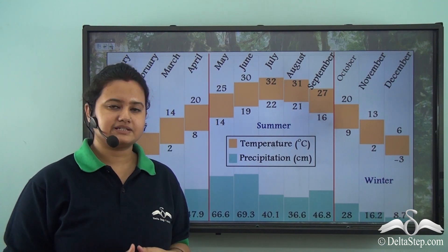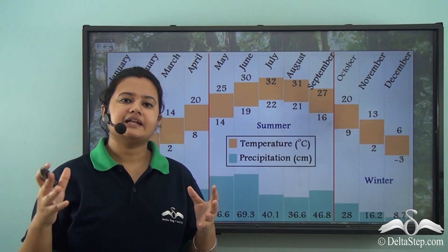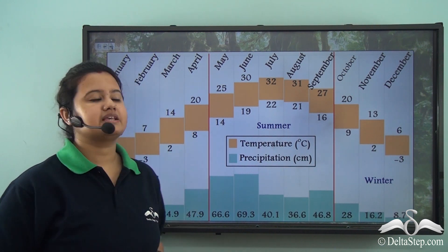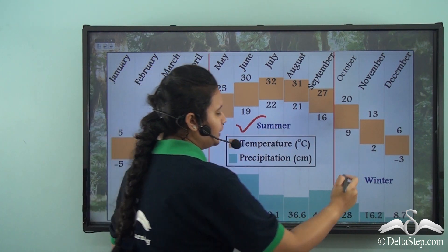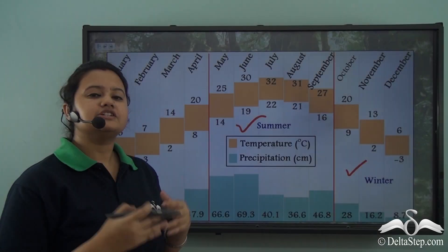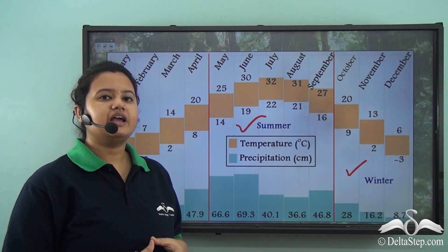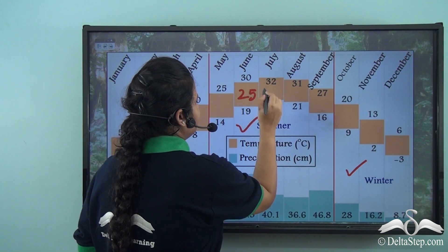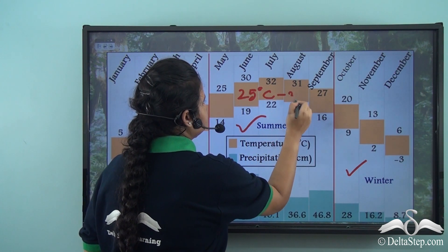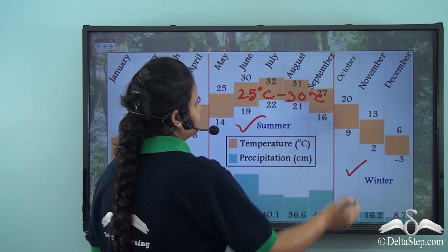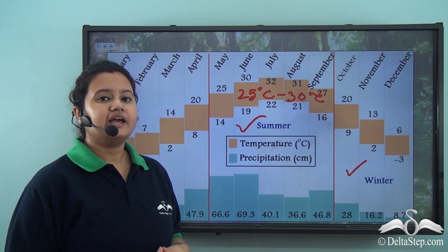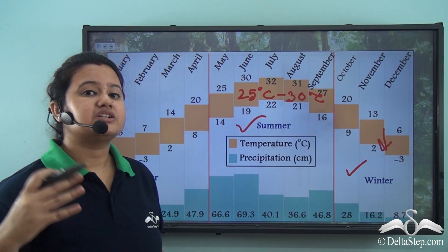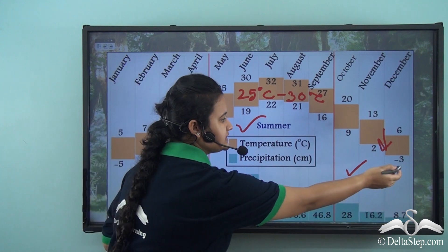Temperate grasslands experience two distinct seasons: summer and winter. During summer, temperatures are usually very high, ranging from 25 to 30 degrees Celsius on average. During winter, there is a significant drop in temperature, and it sometimes drops below freezing point.